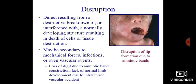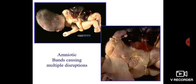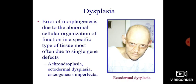This figure shows a disruption of the lip formation due to amniotic band. Amniotic band can cause multiple disruptions. Dysplasia is an error of morphogenesis due to abnormal cellular organization or function in a specific type of tissue, most often due to single gene defect.